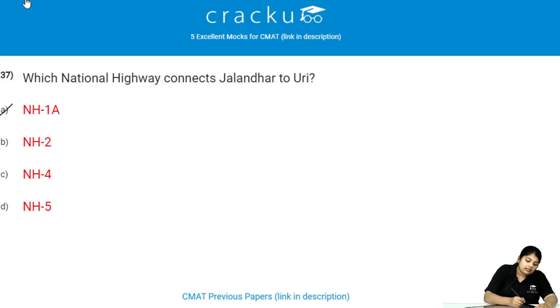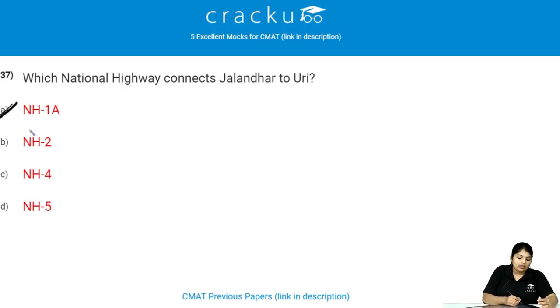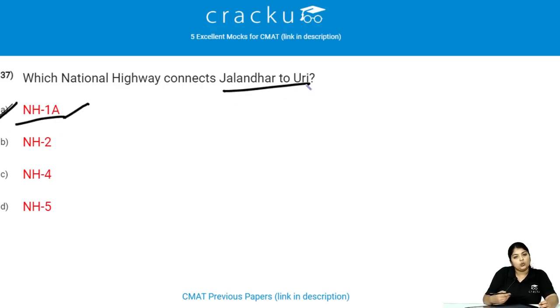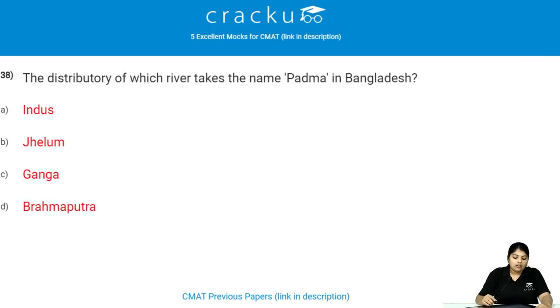Which national highway connects Jalandhar to Uri? According to the old numbering, National Highway 1A connects Jalandhar to Uri.